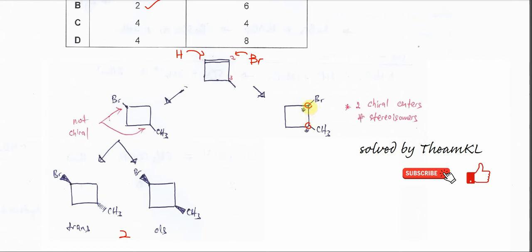Because now these two carbons, they have four different groups. I'll use this one as example. This carbon has one group, two group, three group, and four groups. Because the sequence is different.